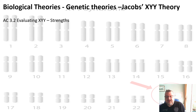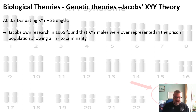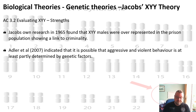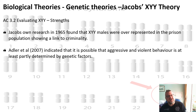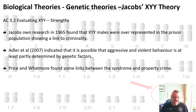Let's evaluate Jacobs's XYY theory. As a strength, the 1965 research did find that XYY males were overrepresented in the prison population, showing a definite link to criminality. Adler et al. in 2007 found that aggressive and violent behaviour is at least partly determined by genetic factors. Price and Watmore also found links between the syndrome and property crime, so it's clear that there is a link here.